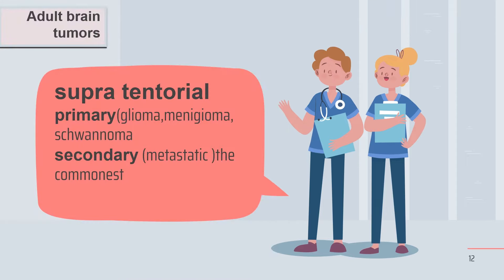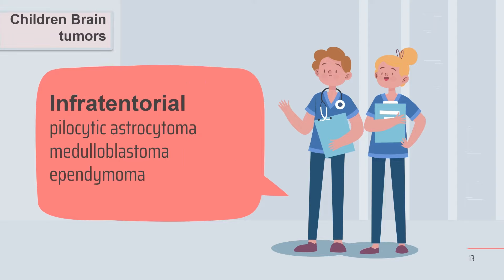We can conclude that supratentorial primary tumors are glioma, meningioma, schwannoma, and secondly metastatic lesions, which are the commonest brain tumors overall. The infratentorial lesions occur usually in the childhood age group, like pilocytic astrocytoma, medulloblastoma, and meningioma.